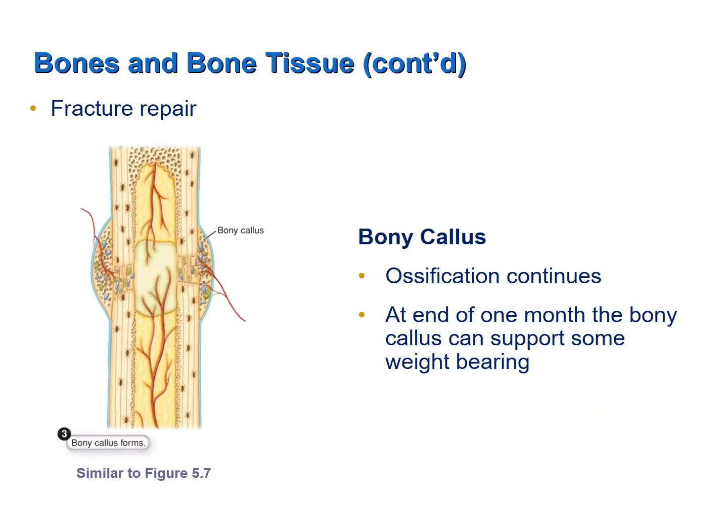Ossification continues such that after about a month, new bone has replaced a large portion of the granulation tissue, forming a bony callus. There is now enough new bone to support some weight.